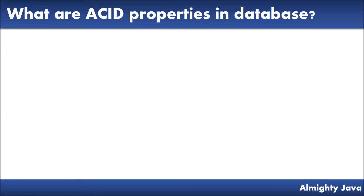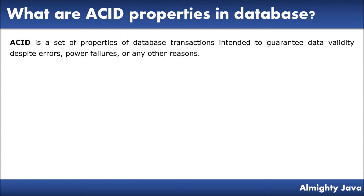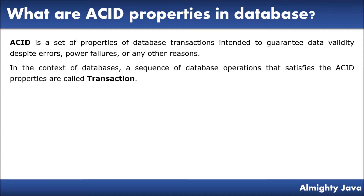I hope the problem statement is clear. Now let's see what ACID properties are in the database. ACID is a set of properties of database transactions intended to guarantee data validity despite errors, power failures, or any other reasons. In the context of databases, a sequence of database operations that satisfies the ACID properties is called a transaction.